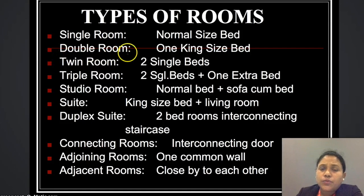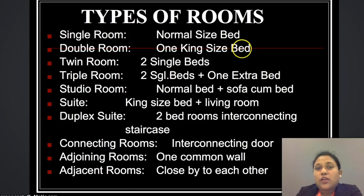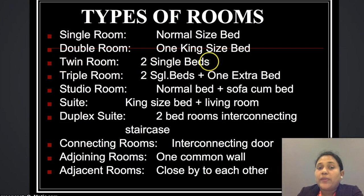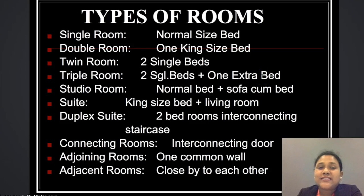A double room has one king size bed, or sometimes two single beds, or one queen bed — meaning it can accommodate two people. A twin room has two single beds and also accommodates two people. A triple room has two single beds plus one extra bed, so occupancy is for three people, as the name implies.